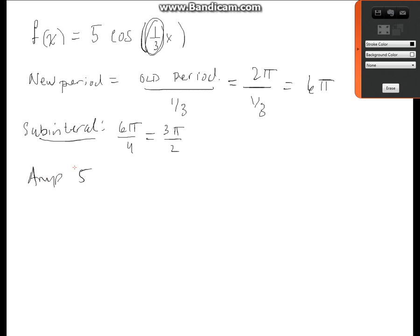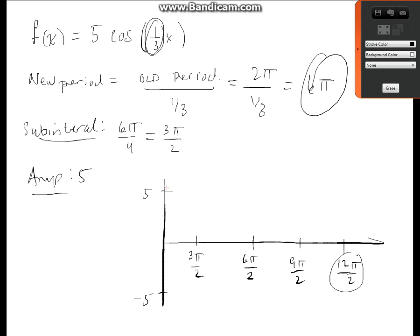So here we go. Let me see if I can do this quick fast in a hurry. Here's 5. Here's negative 5. So this should be 3 pi over 2. 6 pi over 2, or just a regular old 3 pi. 9 pi over 2, and finally 12 pi over 2. Notice 12 pi over 2 is just 6 pi, which should be. And it starts high, goes low, goes to 1, comes back up, and goes up. Pretty simple.